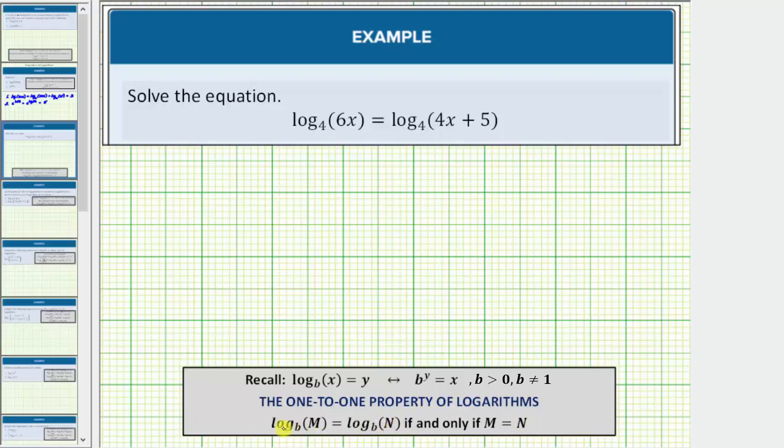This tells us if we have two logarithms equal to each other and the bases are the same, the arguments of the logs must also be equal.